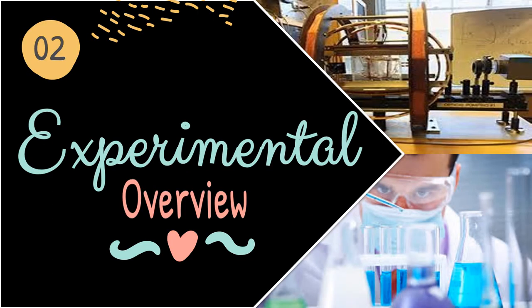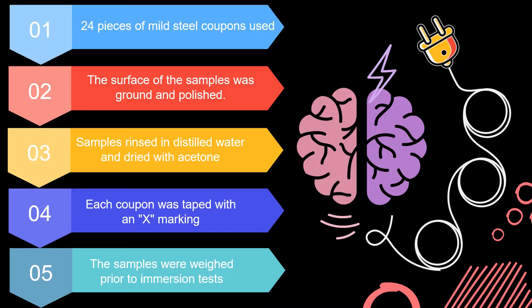We proceed to the experimental method. There were 24 pieces of mild carbon steel coupons used in this study. The surface of the samples was ground and polished with a manual hand-grinding machine. The samples were then rinsed in distilled water and dried with acetone to remove traces of water. This step was done quickly to avoid premature corrosion.